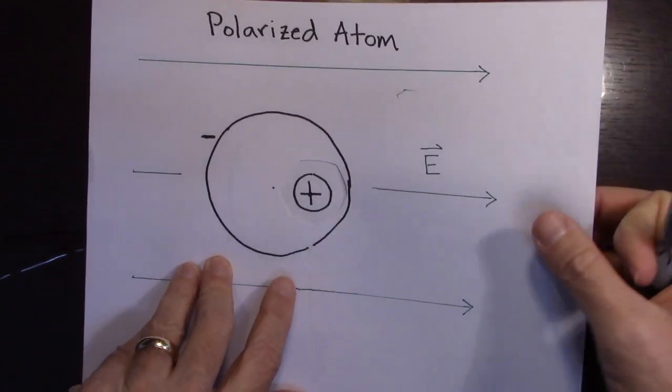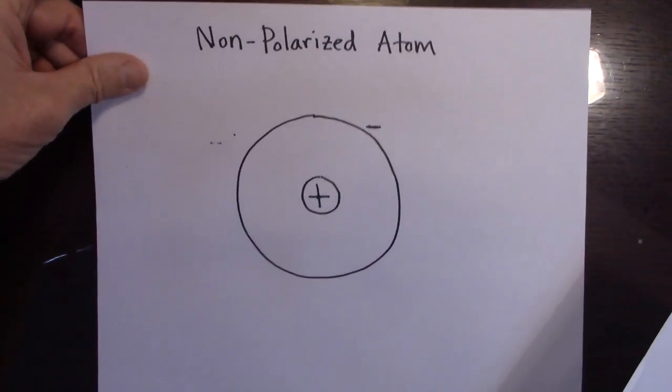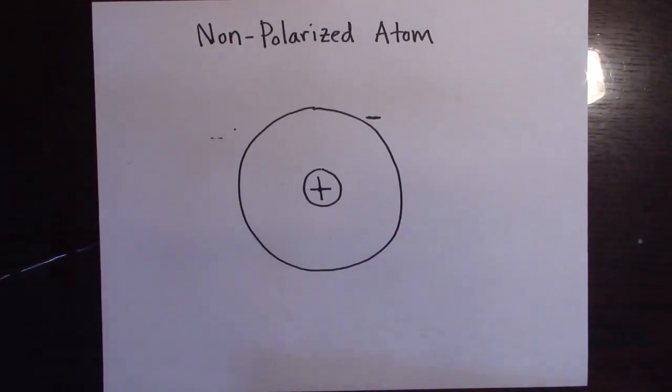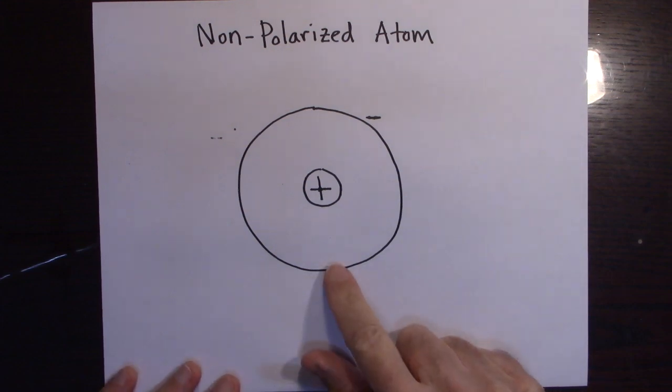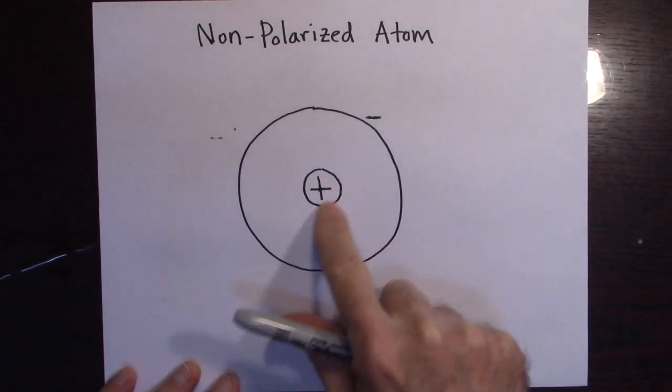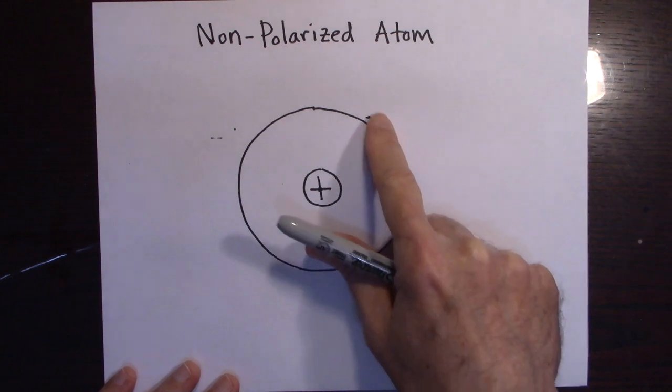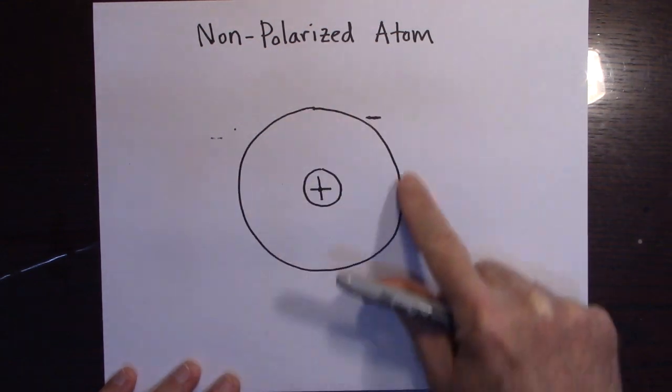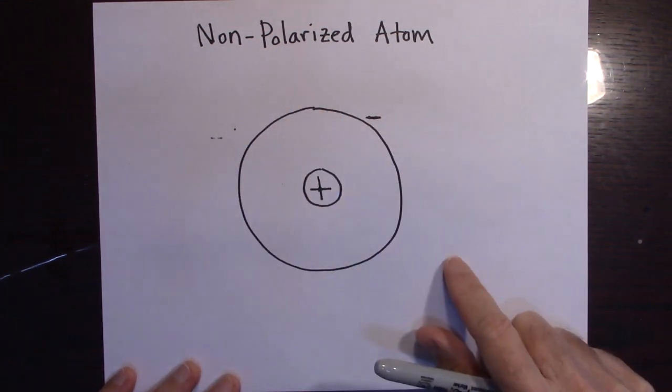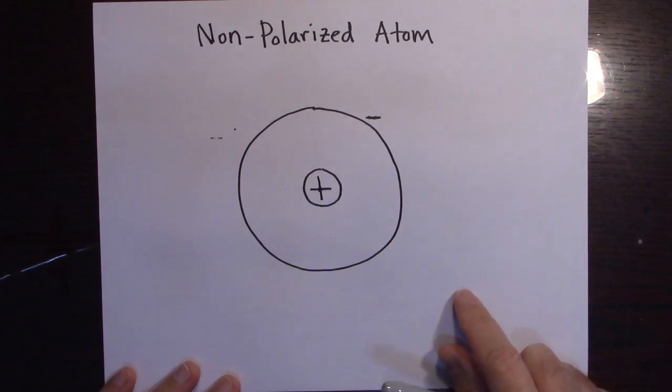So remember we had, in the last video we were talking about that a dielectric has an atom, the positive charge at the center here, and the electrons are on the outer parts of the atom. A very simplified view of the atom.